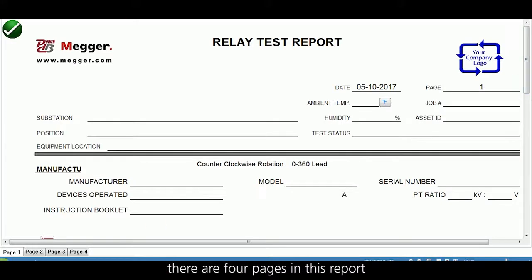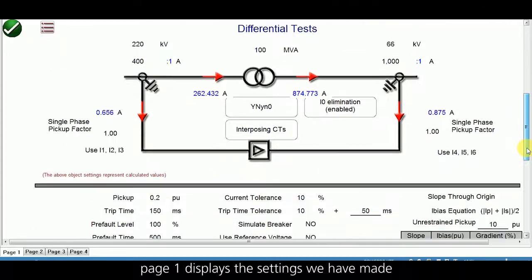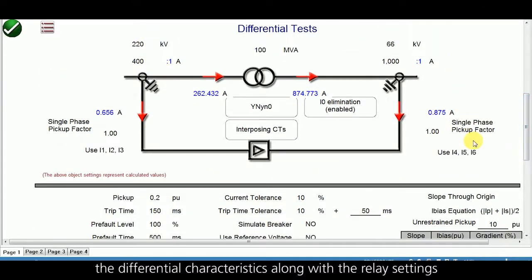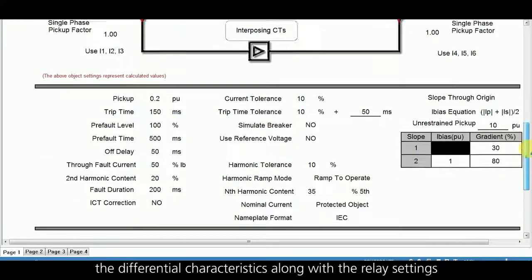There are 4 pages in this report. Page 1 displays the settings that we have made, the differential characteristics along with the relay settings that we have entered.